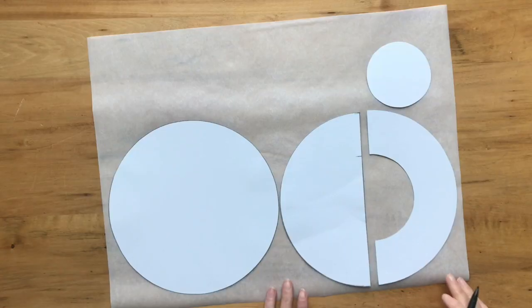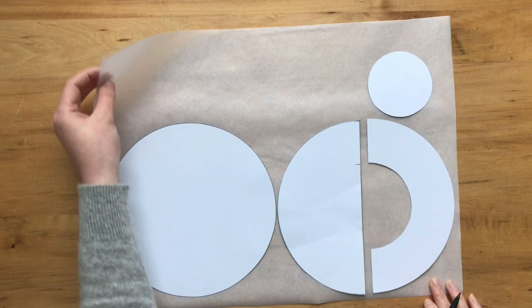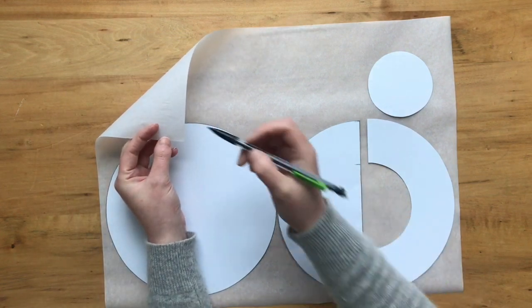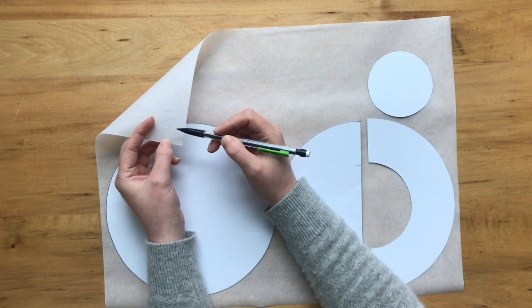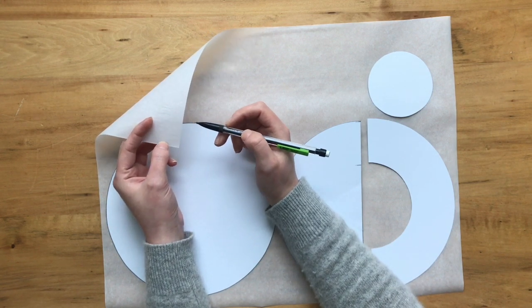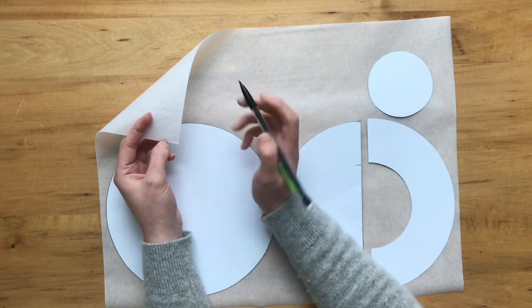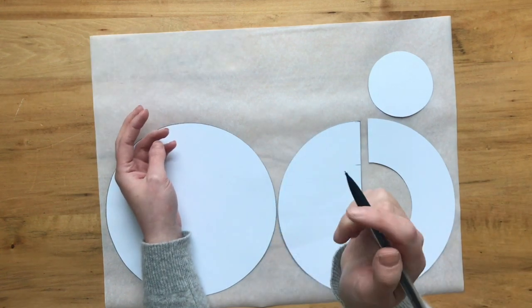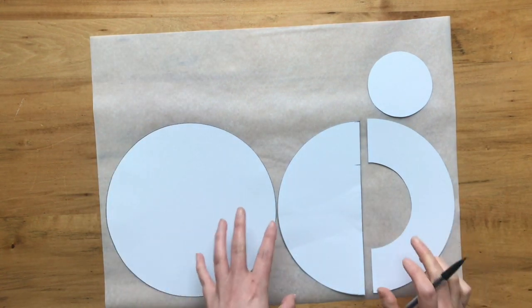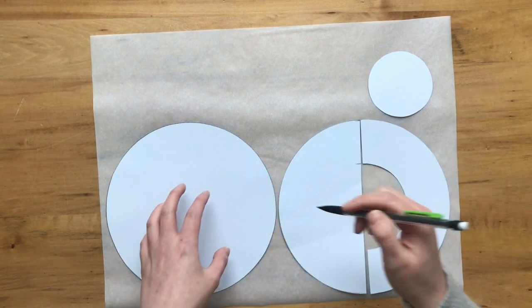Now that my shapes are cut out, I'm going to trace them onto this fusible web adhesive. This is Wonder Under, but you could also use Heat and Bond. There's a thin adhesive web on this side of the paper that when I iron it onto my fabric, it'll transfer the adhesive and allow me to iron my fabric onto my backing piece of fabric. I've grouped my pieces by color and I'm going to trace around them.